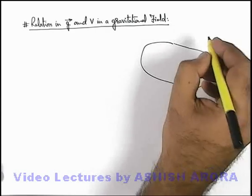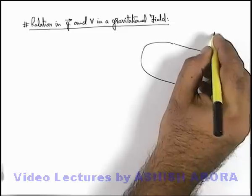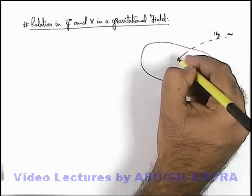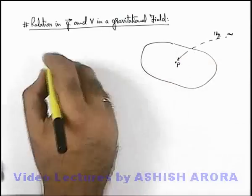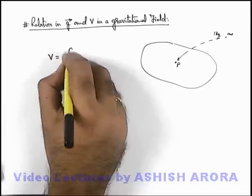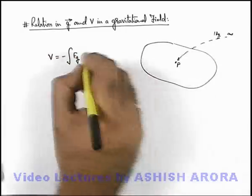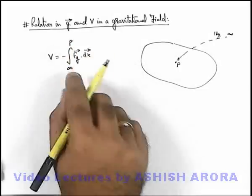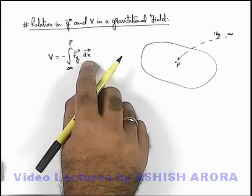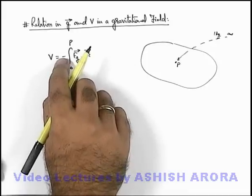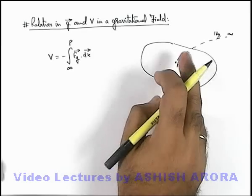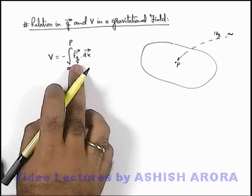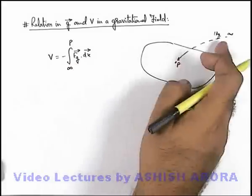So if this is a gravitational field region, and a test mass of unit value is brought from infinity to a point P, we can write that the potential will be the negative of the integration of gravitational forces acting on the mass dot dx, from infinity to P. The negative sign is applied because if x is decreasing, an equal and opposite force is applied, representing the work done by the external agent in bringing the unit mass from infinity to that point.